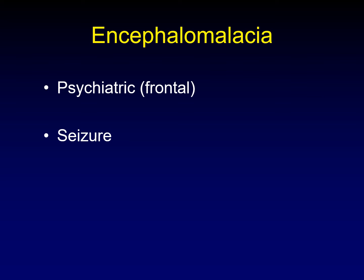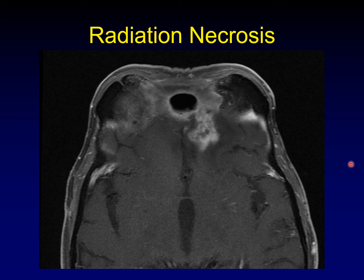Encephalomalacia: you know what it looks like radiologically. The clinical manifestations include psychiatric symptoms — particularly with frontal lobe encephalomalacia — and seizures, since any injured brain tissue is a potential nidus for seizure. Radiation necrosis: although not strictly a surgical complication, it's something you're going to see on all of these patients. There are subtle clues to help distinguish radiation necrosis from recurrent tumor. You can use advanced techniques like perfusion, SPECT, or PET, but there are also clues on post-contrast MRI: the hazy margin, character, and spread can help distinguish radiation necrosis from tumor — though it remains one of the most difficult things we deal with in neuroradiology.